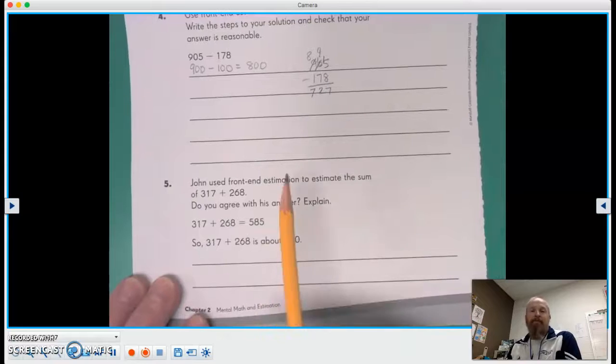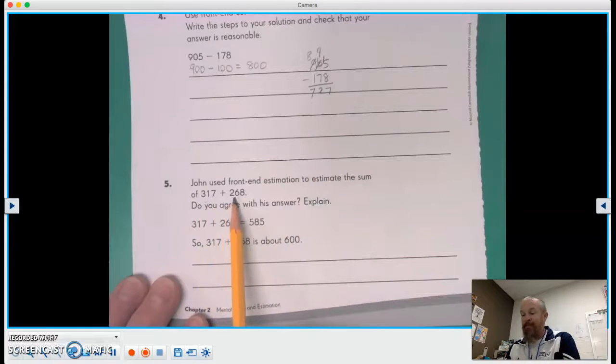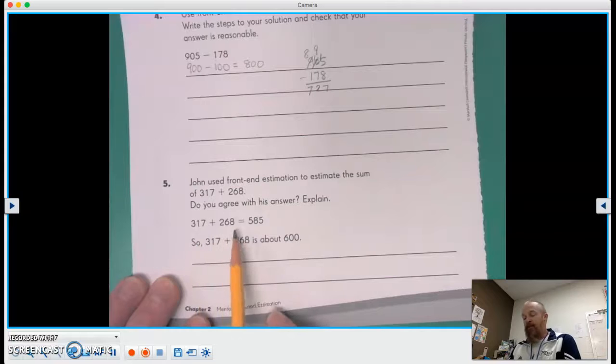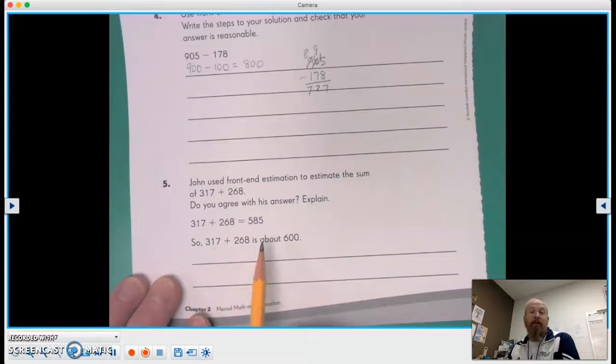Now John used front-end estimation to estimate the sum of 317 plus 268. Do you agree with his answer? Explain. He said 317 plus 268 is 585. So 317 plus 268 is about 600.